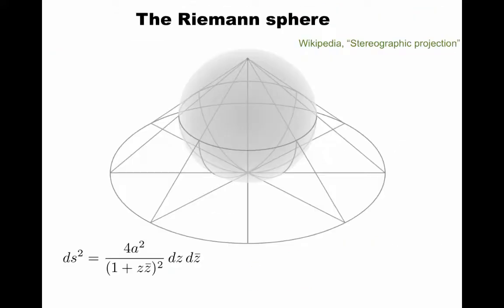String amplitudes at tree level. Tree level for closed string means the complex plane or the Riemann sphere. The Riemann sphere can be projected to the complex plane by stereographic projection, where the point at infinity is the north pole.